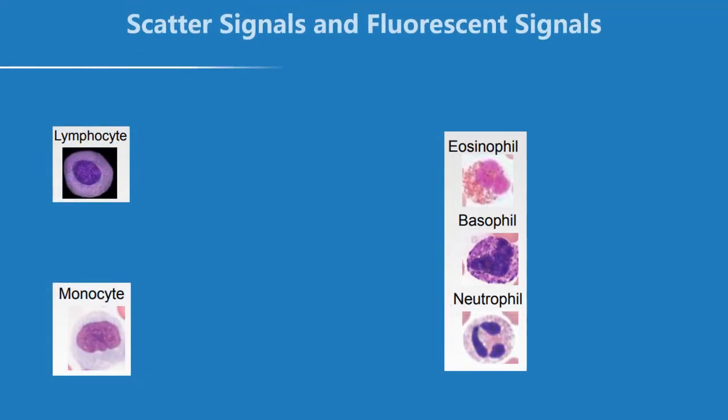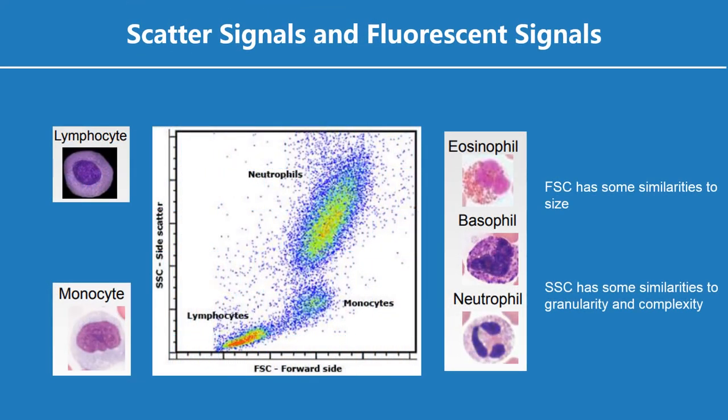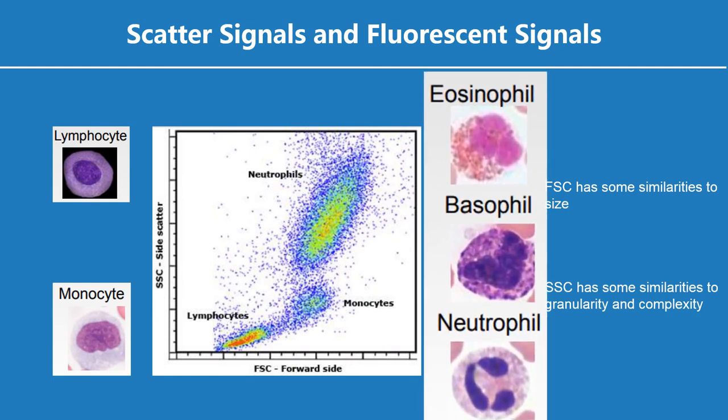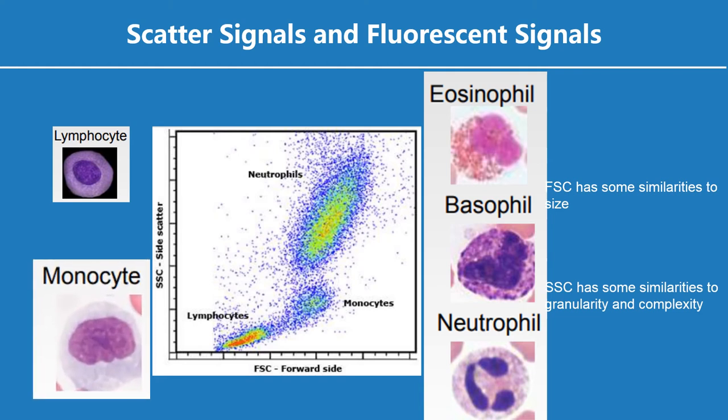A useful example is when running blood samples on the flow cytometer. Larger and more granular granulocyte cells produce a population with high SSC and FSC. Monocytes are large cells but not so granular, so they produce a separate population with high FSC but lower SSC.